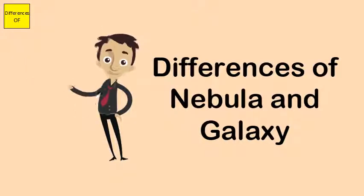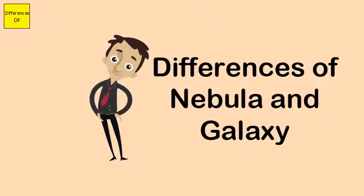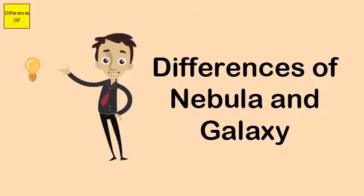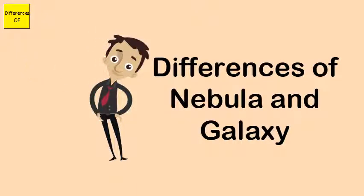Star implosion can form nebulae. Galaxy is not formed during such an implosion. Galaxies generally have a longer lifespan. Nebula has shorter lifespan compared to galaxy.